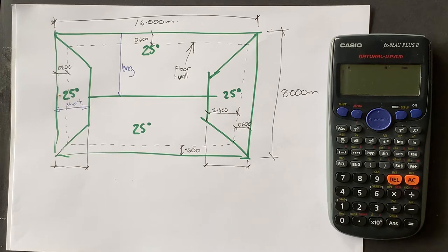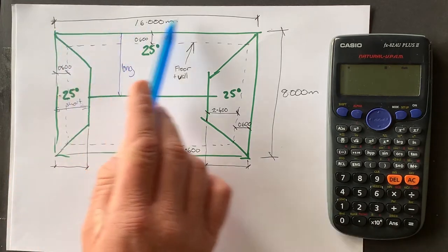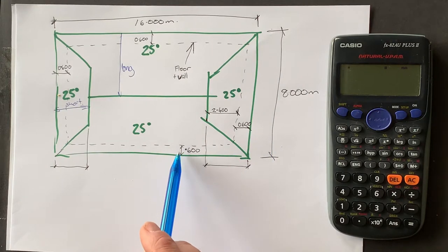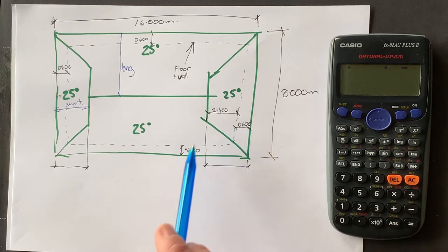It's a 25 degree pitch roof and I've got a total length here and a total width and I've also pointed out that the overhang on all sides is going to be 600 millimeters.